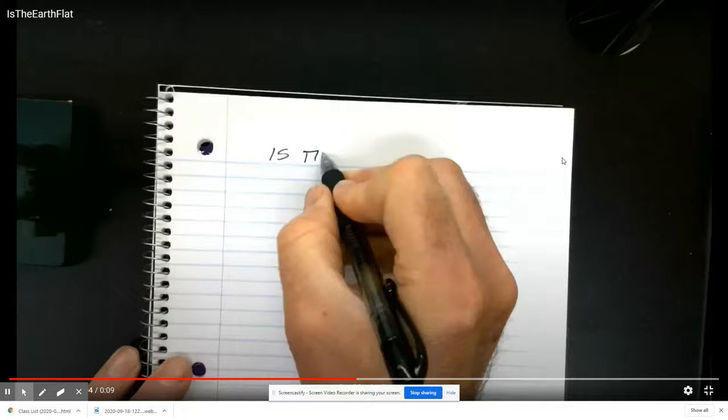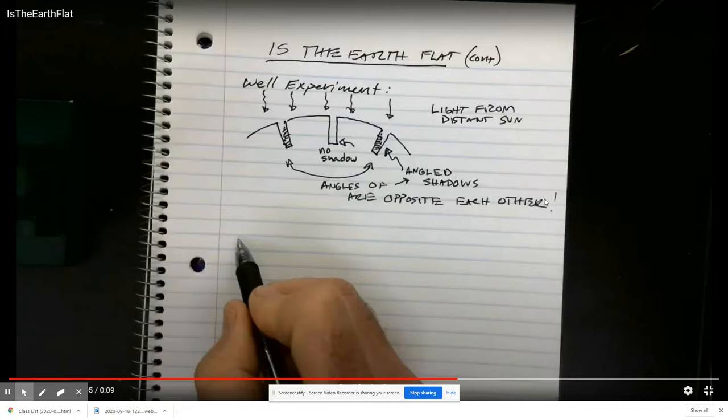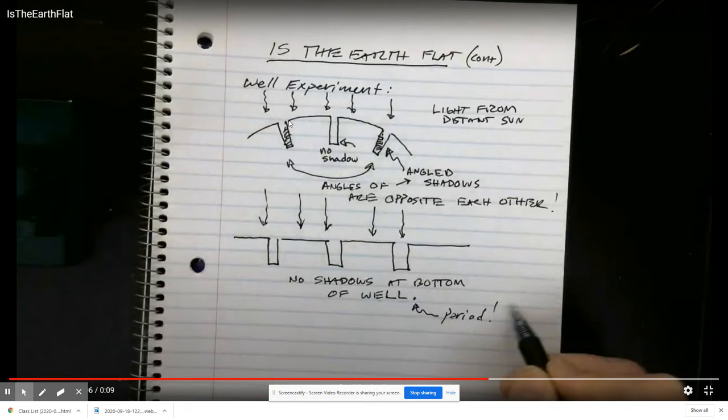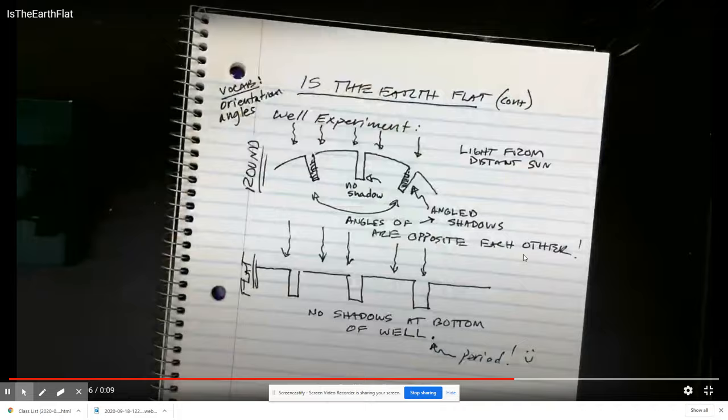So some more evidence goes on to the next page—we need more room, that's fine. It's the well experiment, showing how light coming down into the wells creates a shadow at an angle right here and here, and those two angles are opposite of each other. Whereas if it were a flat Earth and light from the Sun were striking it, there would be no shadow at the bottom of the well at all. So we added some more vocabulary terms there.